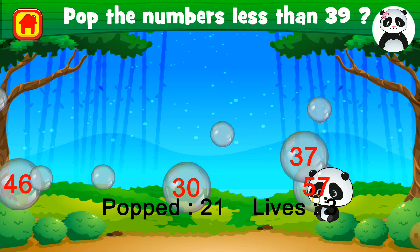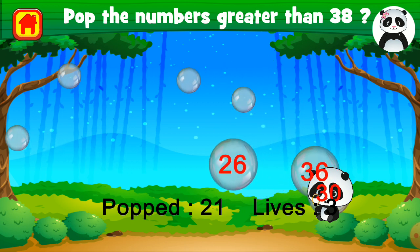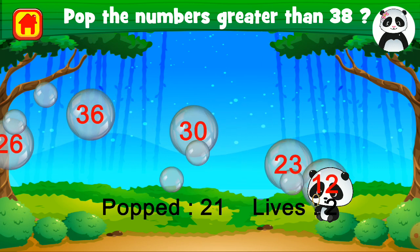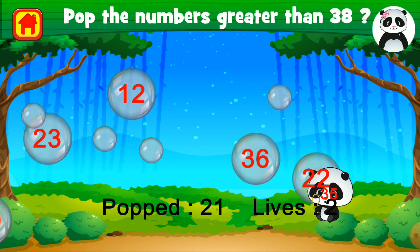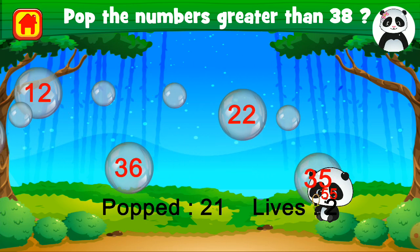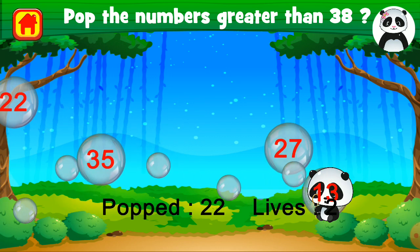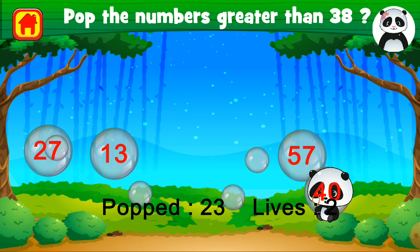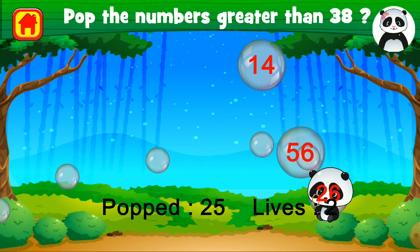30 is less than 39. Pop the bubbles with numbers that are greater than 38. 36 is less than 38 so it's mistaken. All numbers are less than 38 so we do not need to pop these. But 55 is greater than 38 — let's pop it. Brilliant. 54 is also greater than 38. Well done. 57 — well done. 40 — awesome. 56 — excellent.